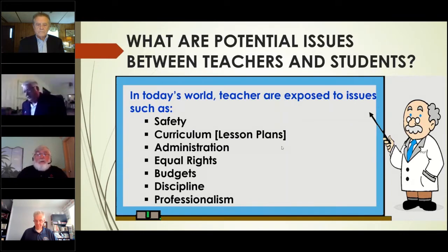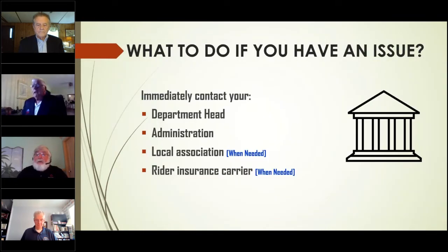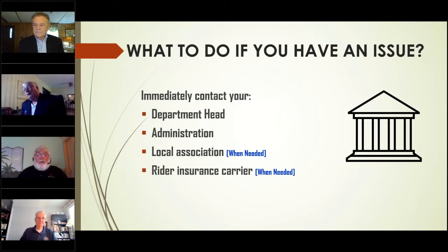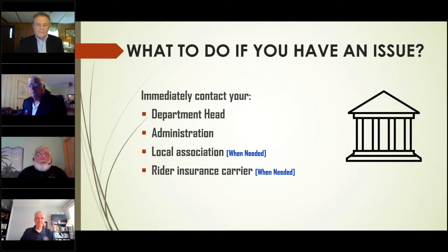What do you do if you have an issue? This one's pretty cut and dry — basically follow the chain of command. Usually that's your department head and your administration. If need be, you can go to your local association, or if things really get bad, then you go to your insurance carrier. Follow the procedure. Chain of command. That simple.